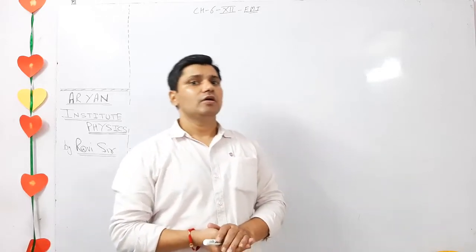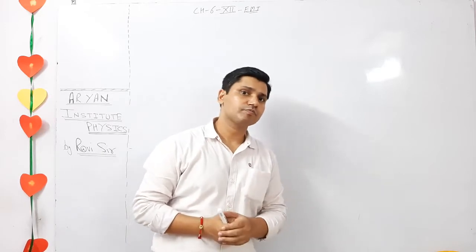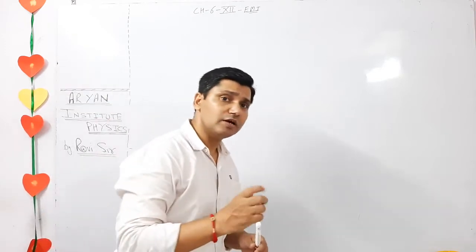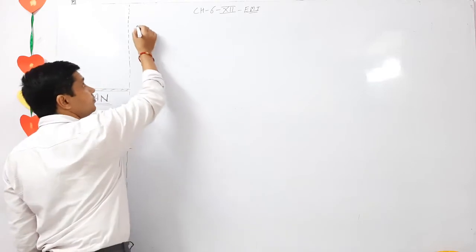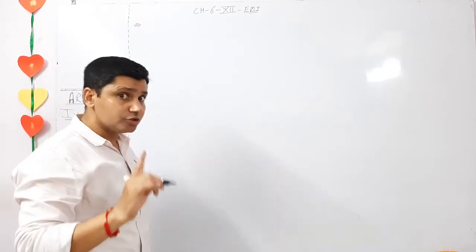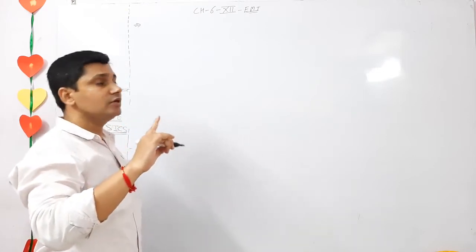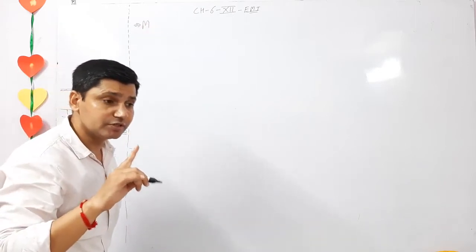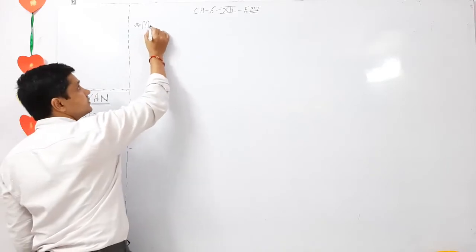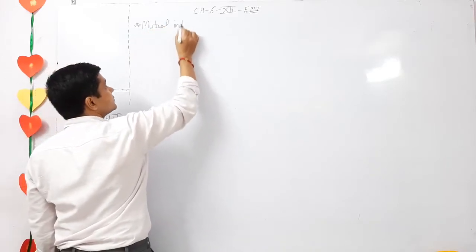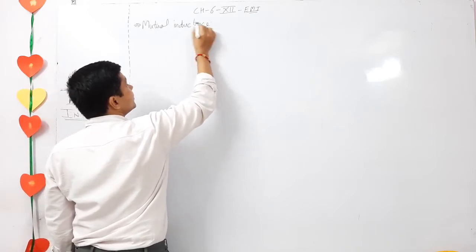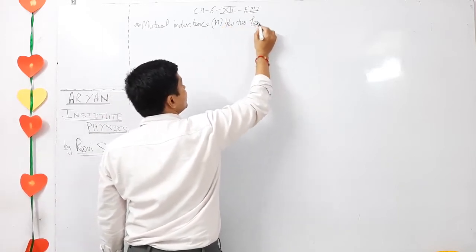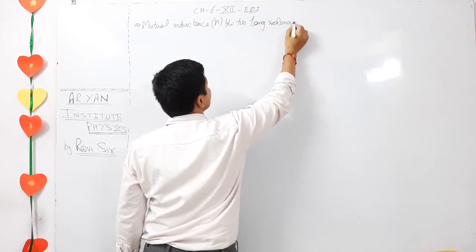Hi students, hope all of you are well and taking care. Welcome to our next class of Chapter 6, Electromagnetic Induction. The next topic we will discuss today was a question asked in board exams related to mutual induction, that is mutual inductance, represented by capital M. What is capital M? Mutual inductance between two long solenoids.